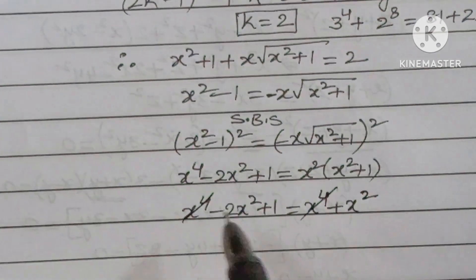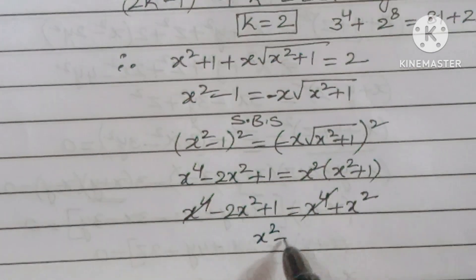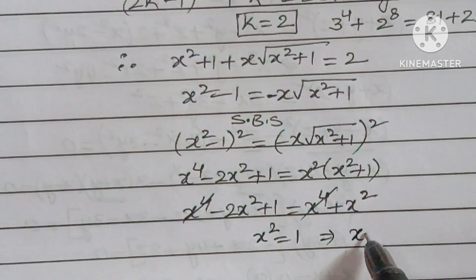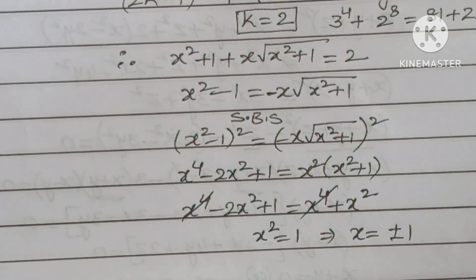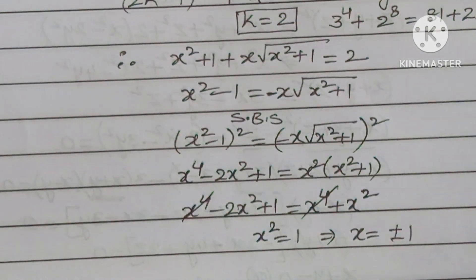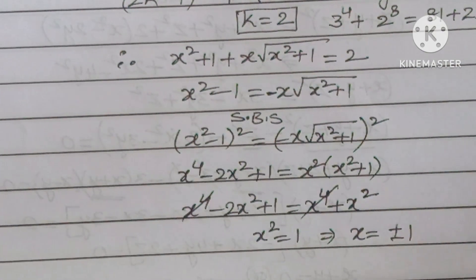The x⁴ terms cancel, giving x² = 1, which implies x = ±1. I hope you understood the video. Thank you for watching. If you like the video, subscribe to the channel and share it with your friends. Once again, thank you for watching.